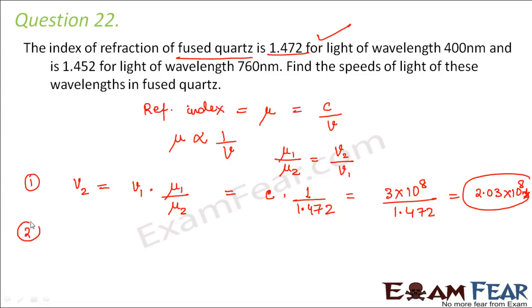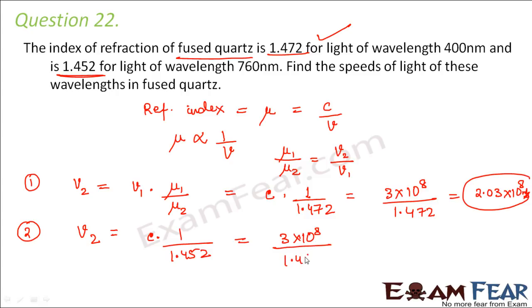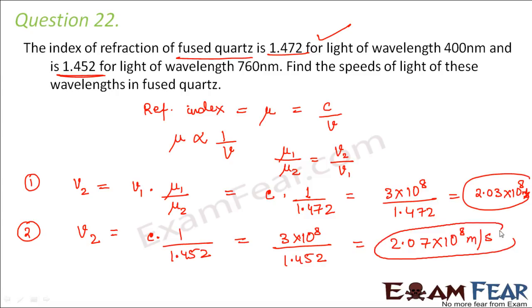In the second scenario, when the wavelength of light is 760 nanometers, the value of mu changes. So the speed of light would also change — it would be c times 1 divided by 1.452. So 3×10⁸ divided by 1.452 equals 2.07×10⁸ m/s. So these are the speeds of light of the two wavelengths in fused quartz.